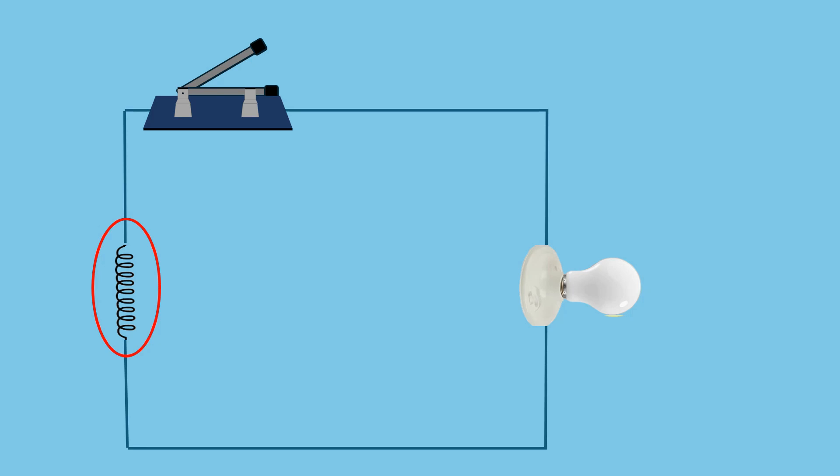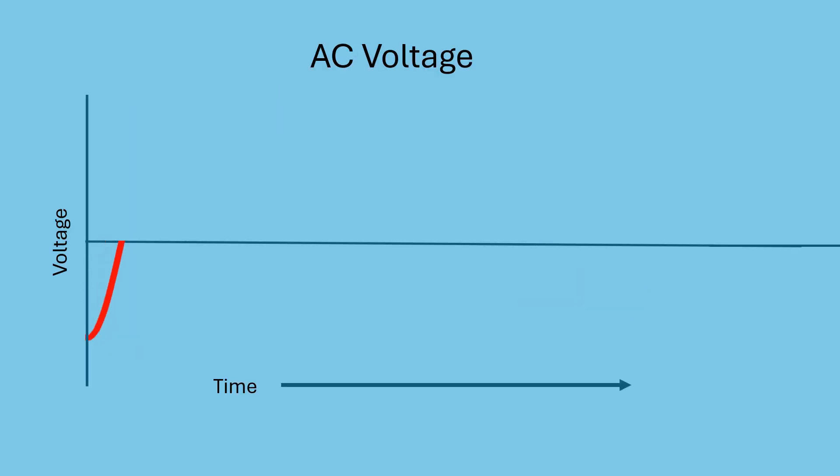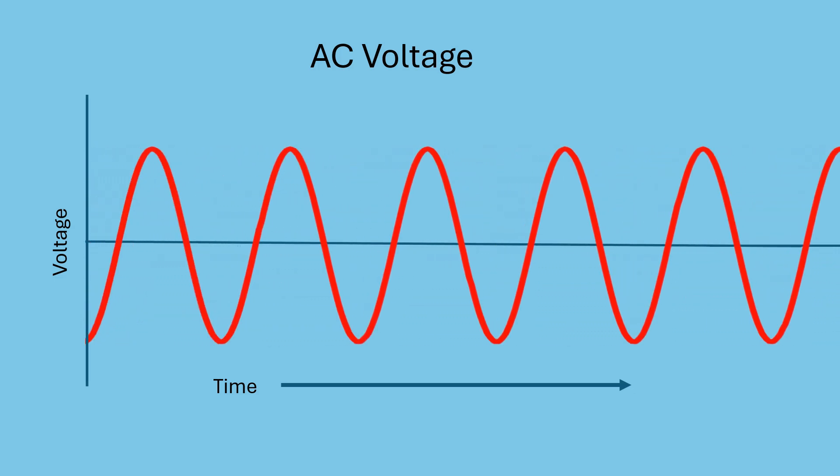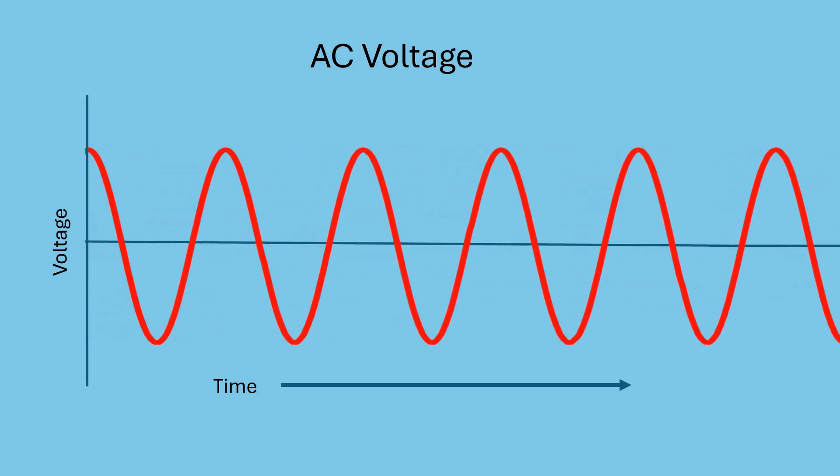In AC systems, the current and voltage are constantly changing directions. In North America, we use 60 hertz electricity, meaning that it changes directions back and forth 60 times every second. That's fast, but this graph gives you a basic idea of how AC alternates between positive and negative voltage.